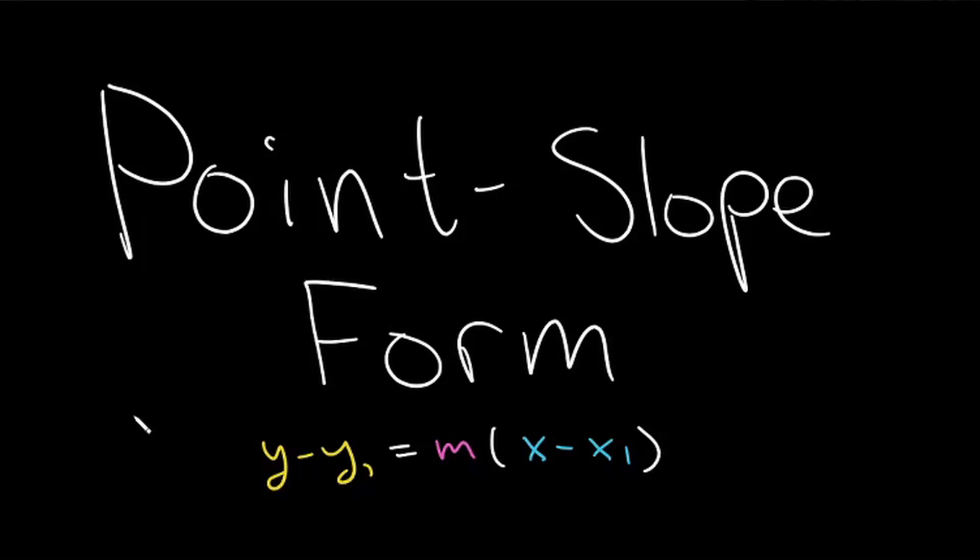Point-slope form. So what if you had a plain axis like the one shown here, and you had a point, let's call this point x1, y1.